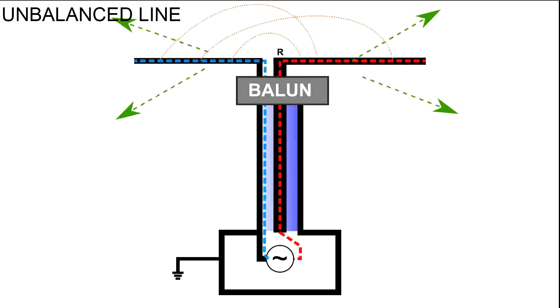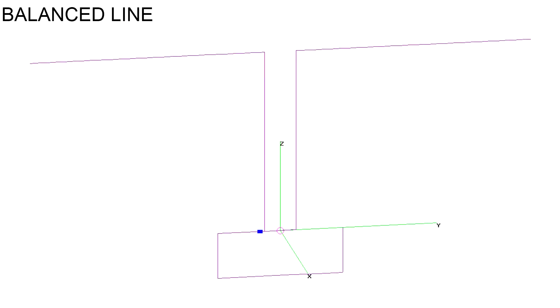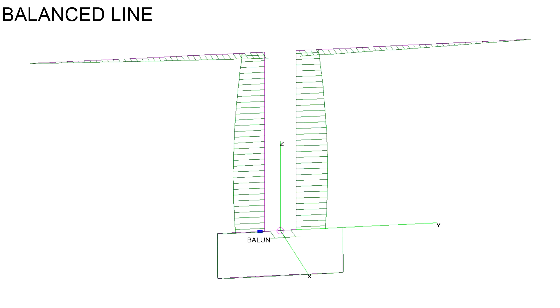A balun is a component that allows differential currents to pass through, while it stops common-mode currents. In this way, it avoids the coaxial shield to take power to the radiation. Here, we are adding a balun between an unbalanced radio and a balanced line. In the simulation, the balun is represented by this impedance in series with the common-mode path. If we plot the current's development, we see that symmetry has been restored and the transmission line is not radiating.